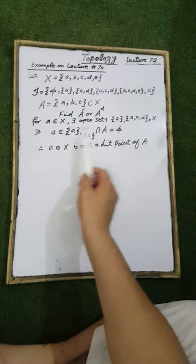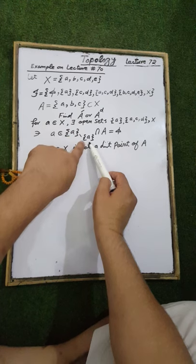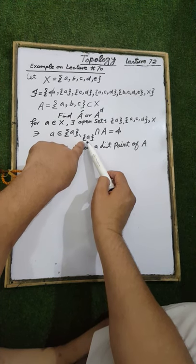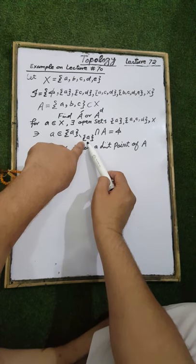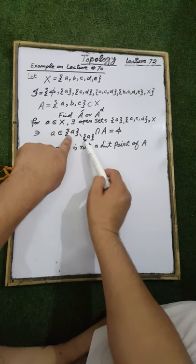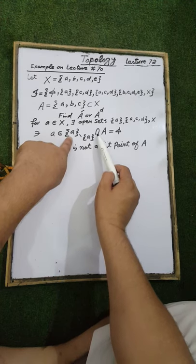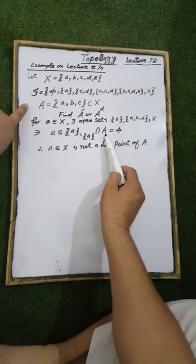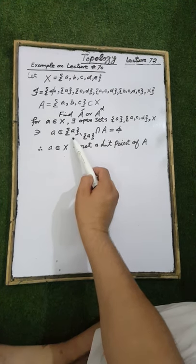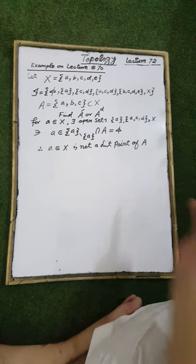Mathematically, the open set minus the set containing element a, intersected with the set A, is an empty set. Therefore, the element a is not a limit point of the set A.